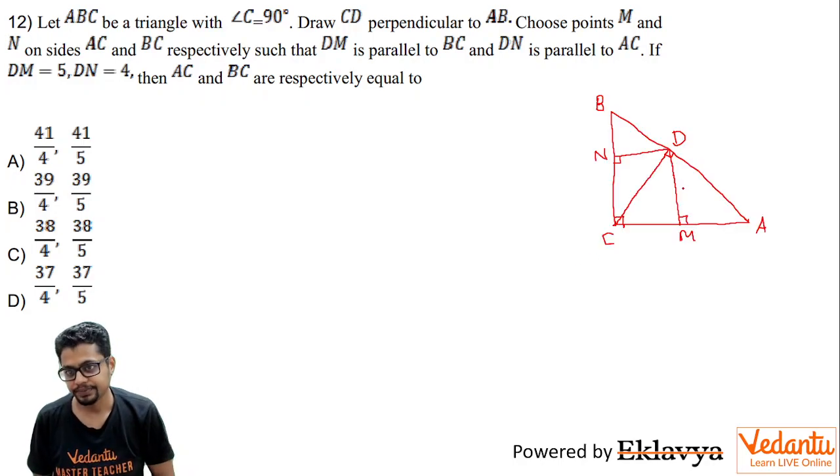This is what the situation is. ABC is a triangle right angled at C. D is such that CD is perpendicular to AB. DM is parallel to BC, hence DM is perpendicular to AC. M lies on AC. Similarly, N lies on BC such that DN is parallel to AC, hence DN is perpendicular to BC.